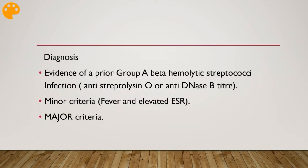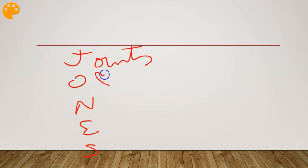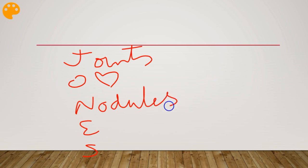Diagnosis includes evidence of group A beta-hemolytic streptococcal infection: anti-streptolysin O or anti-DNase B titer. Minor criteria include fever and elevated ESR. The major criteria follow the Jones criteria. A mnemonic using J-O-N-E-S: J = Joints (polyarthralgia), O = pancarditis, N = subcutaneous Nodules, E = Erythema marginatum (erythematous rash on the margin), and S = Sydenham's chorea.